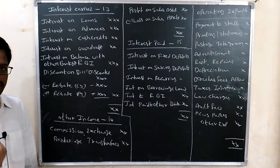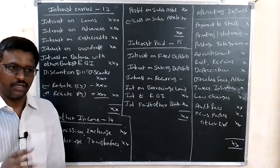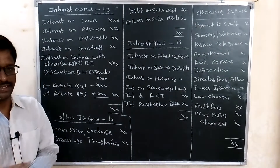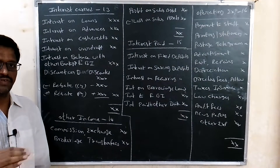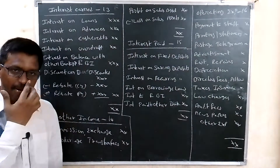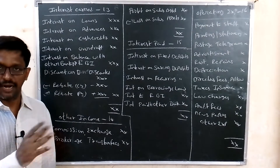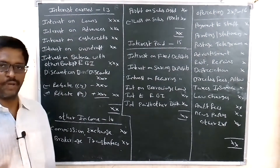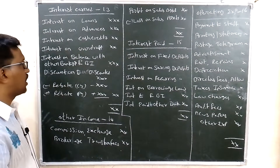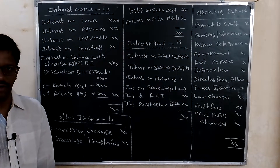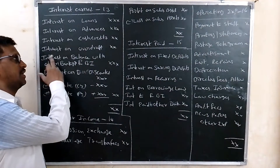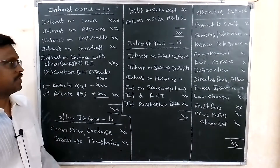Interest on cash credit: when a loan is sanctioned to a customer, the amount is credited to their account. Interest is charged on the amount withdrawn by the customer. That is interest on cash credit. Interest on overdraft: this is given to customers who maintain a current account and go over their limit — then interest on overdraft is charged.